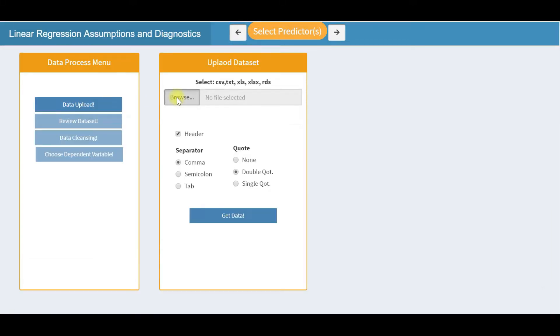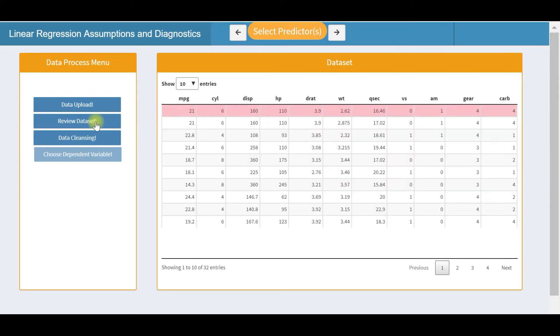Let us browse, choose for example the mtcars dataset, and import it into our application. Next, review the dataset. Please note that this system will add only numeric fields, categorical fields in the dataset will be ignored.